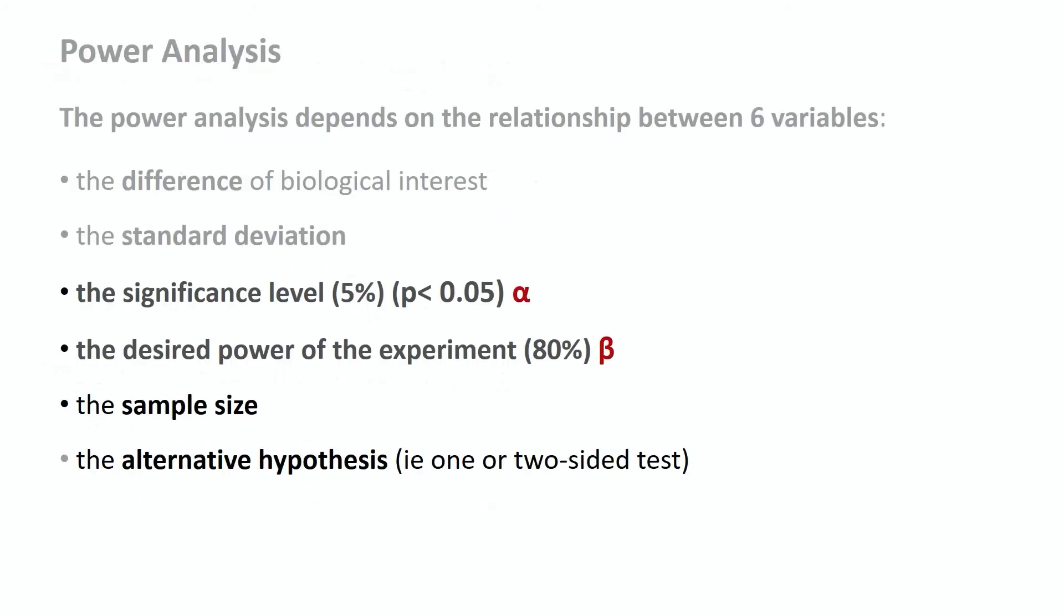Okay, so we've seen the first two variables. The following two we've talked about already, that's alpha and the power itself. Then, the fifth variable is sample size, the one we are after most of the time.